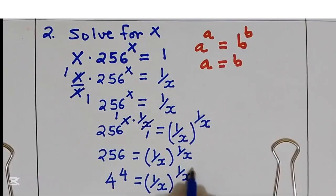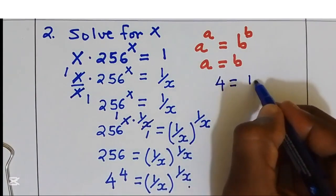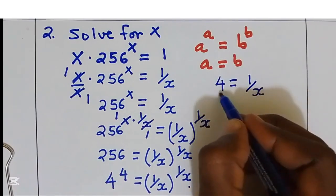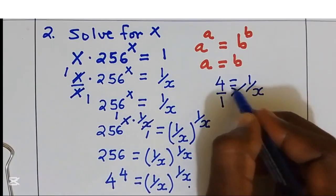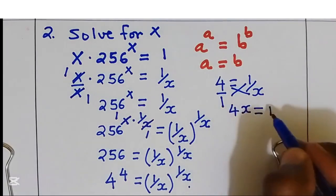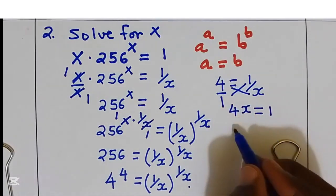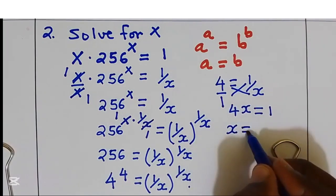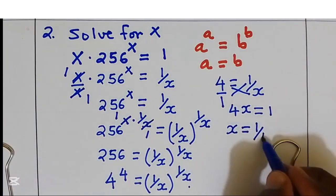From here, 4 is equal to 1 over x. I'm going to put this as over 1. I'll cross and multiply. I get 4x is equal to 1. I divide by 4 both sides, I'll get x is equal to 1 over 4.